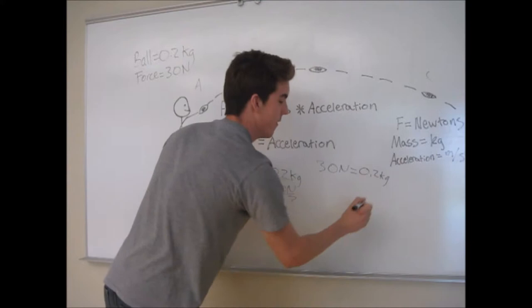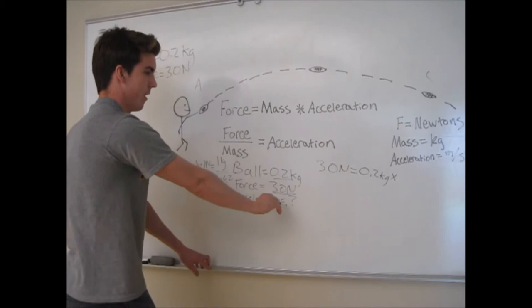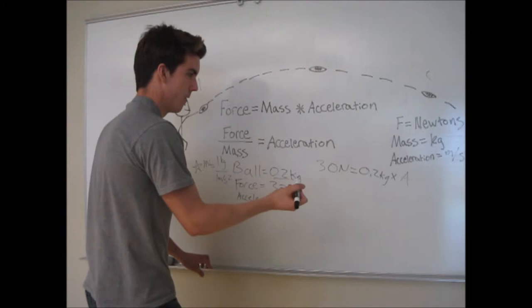If that were in grams, you'd have to divide by 1,000 to get kilograms. Times our unknown variable of acceleration. We can call this A. Then we just simply solve, divide by 0.2, which is the same as multiplying by 5.